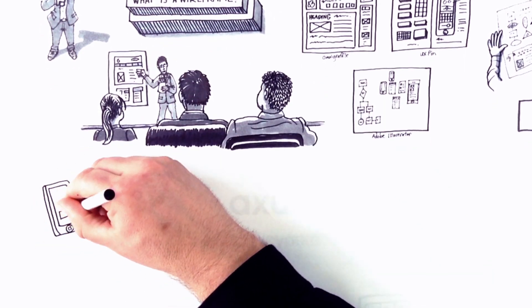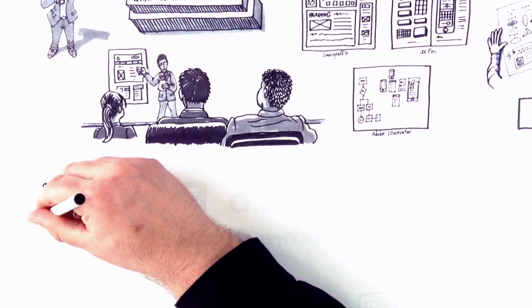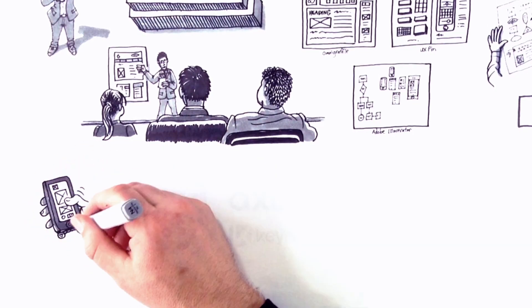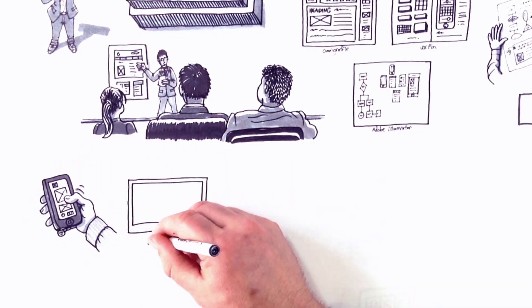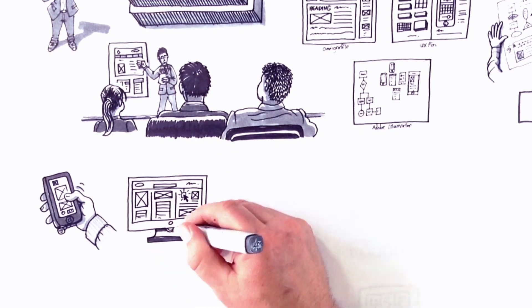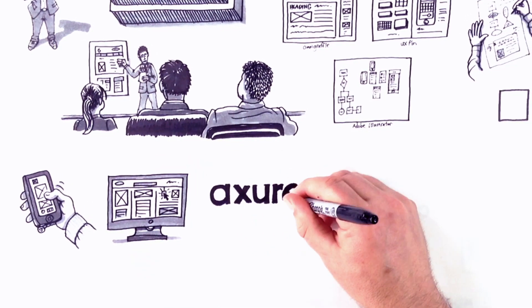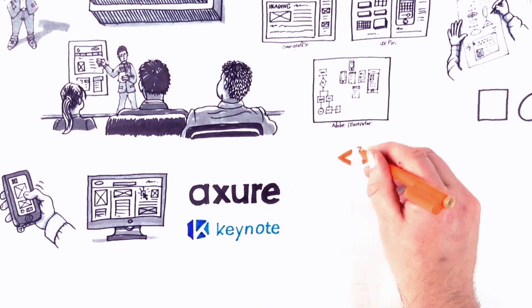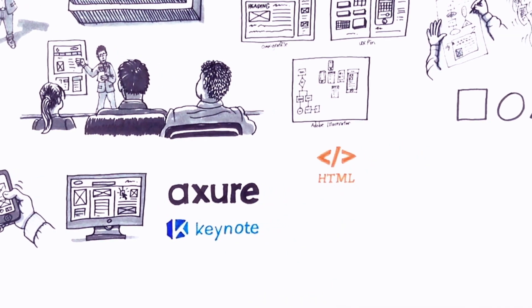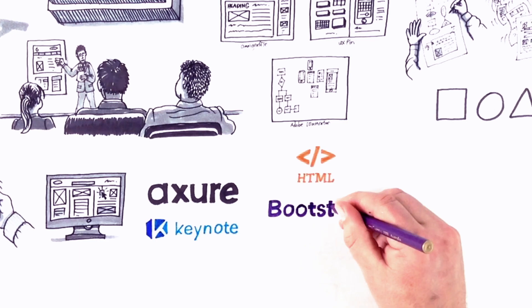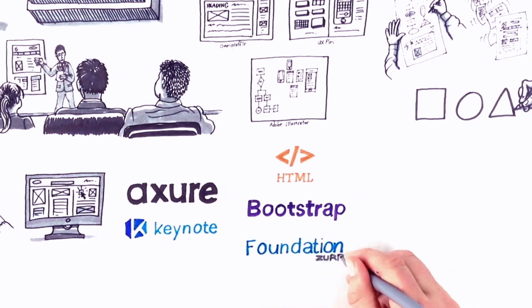At the high fidelity end of the spectrum, a clickable prototype lets you design interactions and user flow. Clickable prototypes are the way to go when conducting usability testing. You could use Axure, Keynote, or even create wireframes directly into the browser using HTML, with the help of frameworks such as Bootstrap or Foundation.